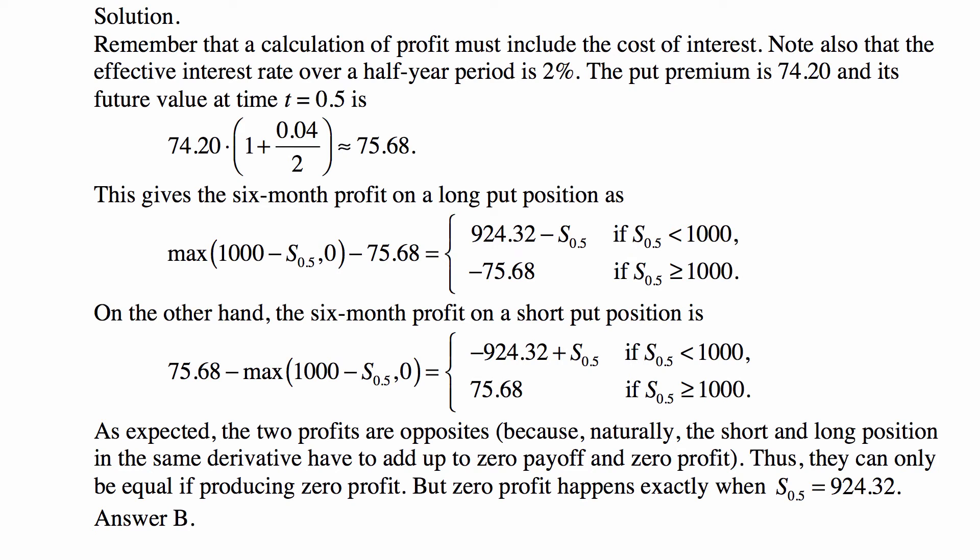On the other hand, the six-month profit on a short put position is - well, the important thing to remember about this is that between the two parties engaged in this transaction, this is a zero-sum game, so it's exactly the opposite of the previous value. So it's 75.68 minus the maximum of 1,000 minus S_0.5 and 0. It's the same thing but with a minus sign, and of course the two profits are opposites.